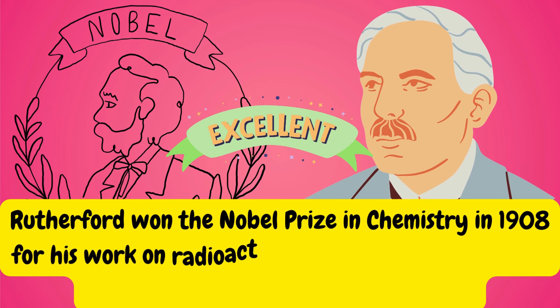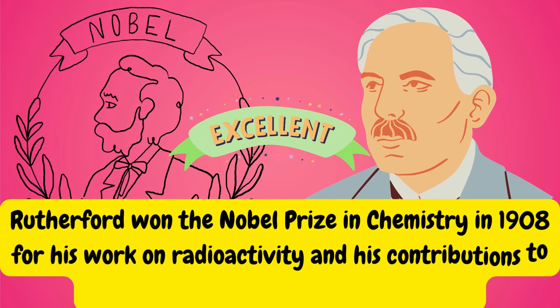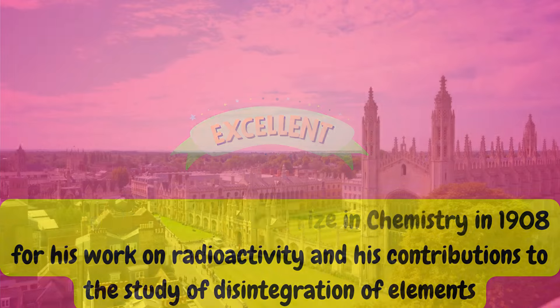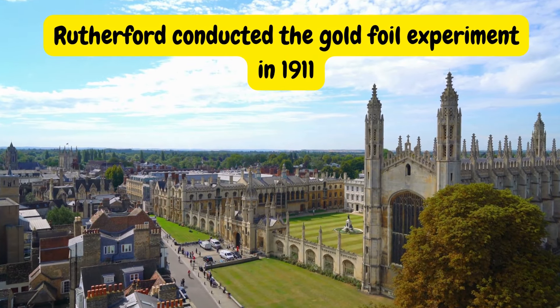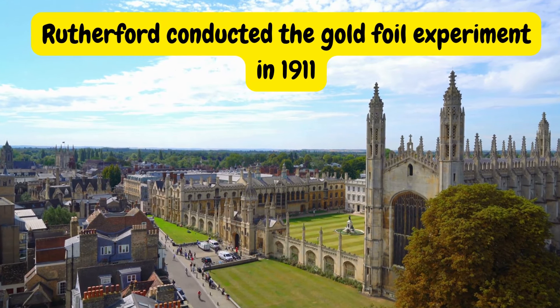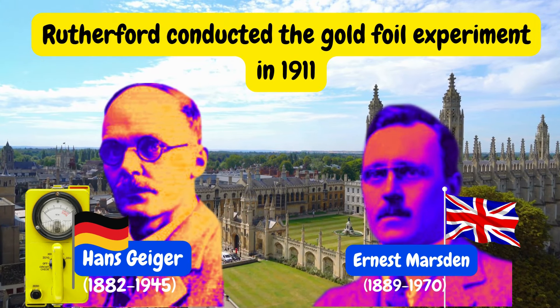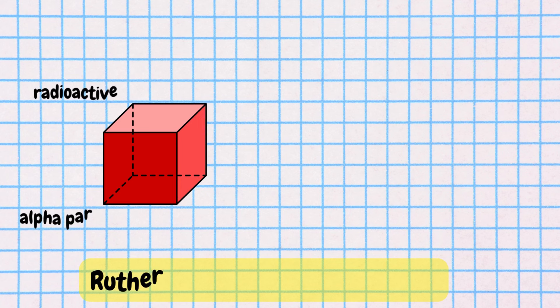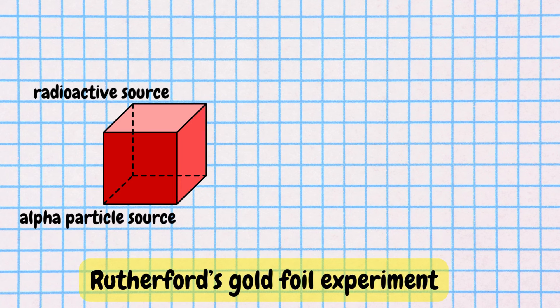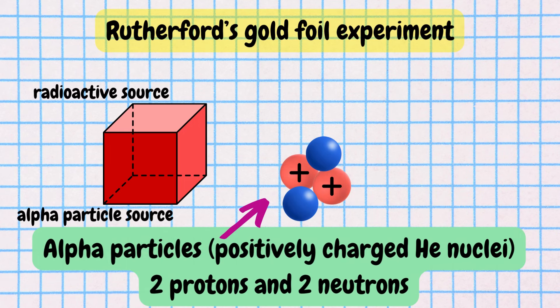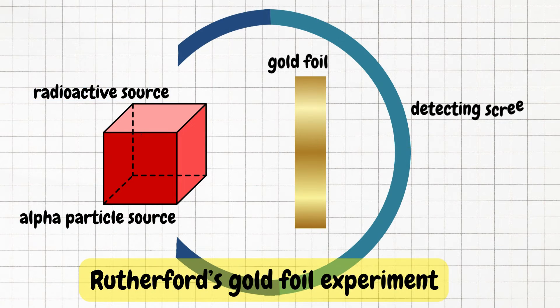Rutherford conducted his famous gold foil experiment in 1911 with his colleagues Hans Geiger and Ernest Marsden. The setup consisted of a radioactive source which emitted alpha particles (which are positively charged helium nuclei), a thin sheet of gold foil, and a detecting screen.